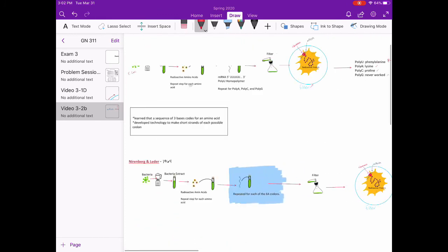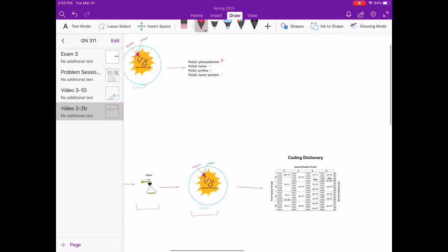By 1964, Nirenberg and Leder knew that codons were three bases long and were able to form these short sequences. They repeated the experiment and ran it for each of the 64 possible codon sequences and were able to determine what amino acid 61 of the codons coded for. This has provided us with the codon dictionary we use today.